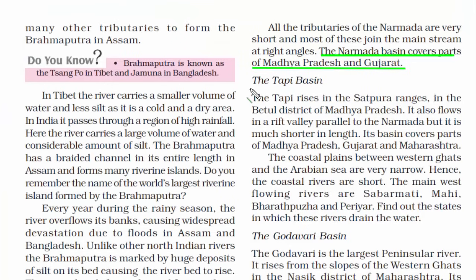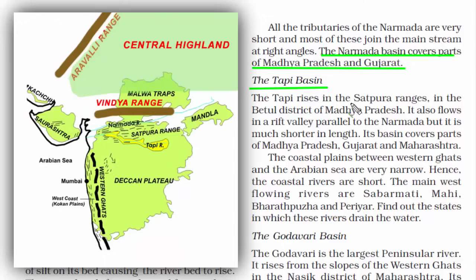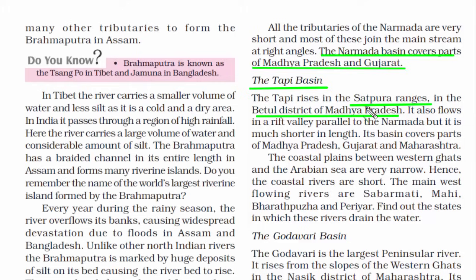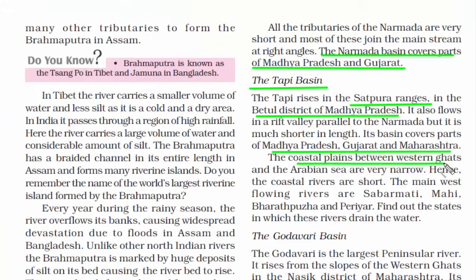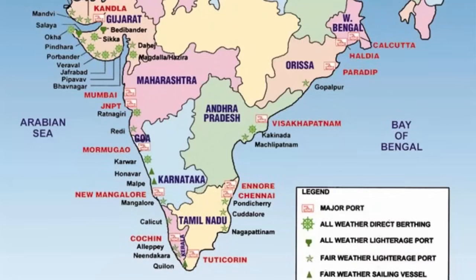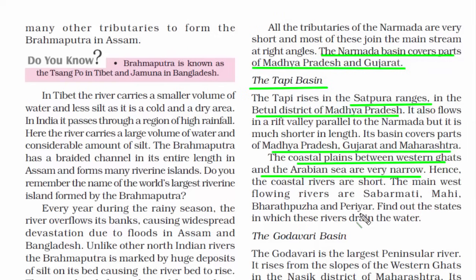Now we will read about the Tapi Basin. The river Tapi rises in the Satpura range in Madhya Pradesh, specifically in Betul district. This river flows parallel to the river Narmada. Narmada covers Madhya Pradesh and Gujarat, but Tapi covers Madhya Pradesh, Gujarat and Maharashtra. The coastal plains between the Western Ghats and the Arabian Sea are very narrow, and due to this there are more ports on the western side than the eastern side of our country, as the continental shelf on the eastern coast is very long and not ideal for ports.